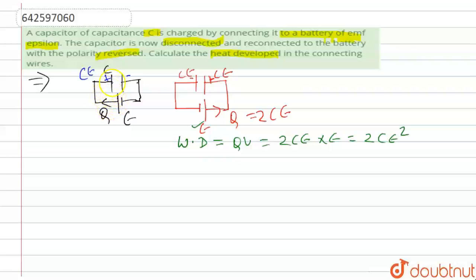Now see earlier, the potential energy stored in the battery in the initial case. The potential energy stored initially is 1/2 CV square.